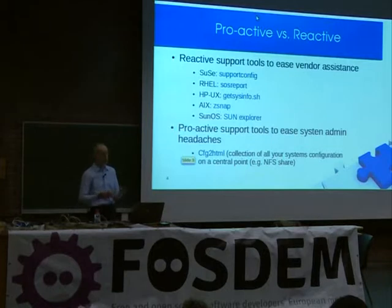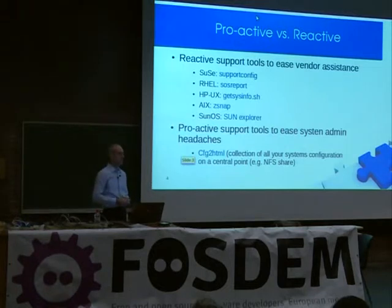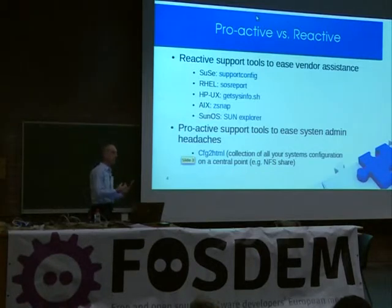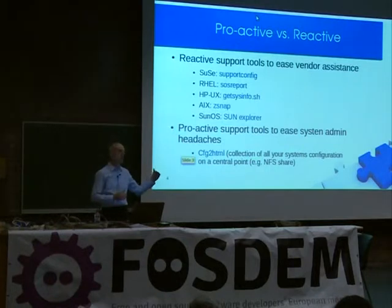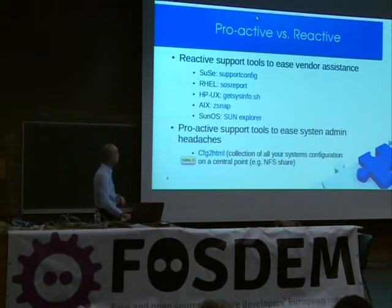You can see these as proactive or reactive kinds of tools. The reactive support tools are highly available on the market — SUSE has them, RHEL has them, HPX has a kind of EX. But as I said, it's after the fact: when you have a problem, you collect your information and send it to the vendor so they can see what the system has to reveal about the problem. Config to HTML is more proactive — you collect it before having any problems. I even keep a set of older snapshots from every week, wrap them up every month, and put them aside. So I can always have a one-year history of every system, which has proved its value a lot to me and to customers.